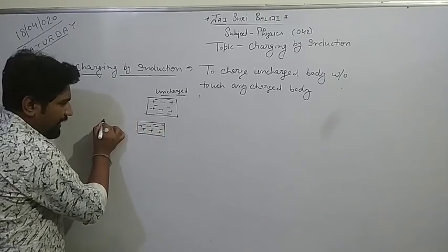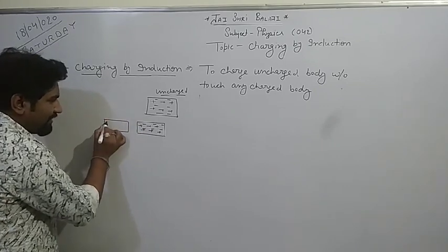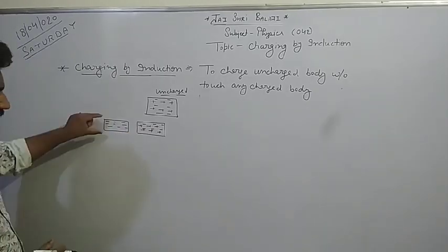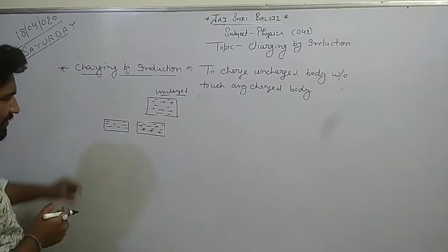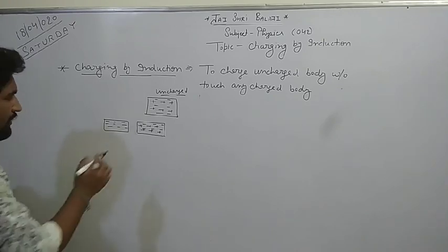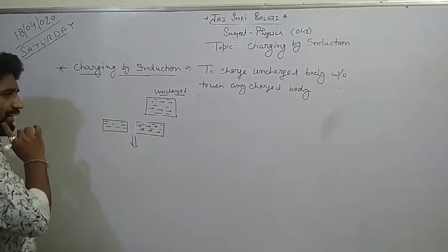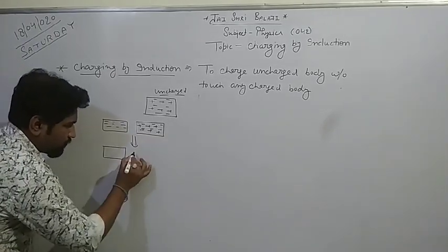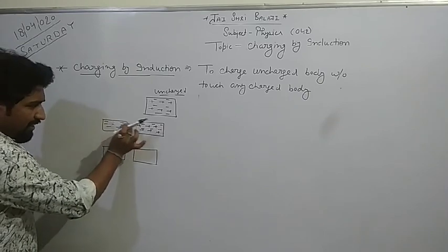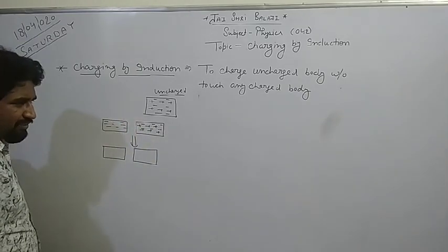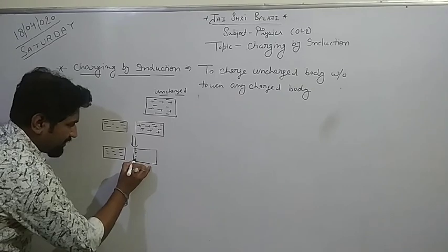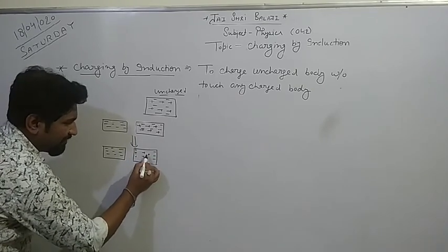In the first step, I will bring a plastic material which is negatively charged — meaning an excess number of negative charges is present in the plastic material — and bring it near the uncharged body. I will not touch it. In the second step, this negative charge will attract the positive charge and repel the negative charge. So positive charge will be on one side and negative charge on the other.